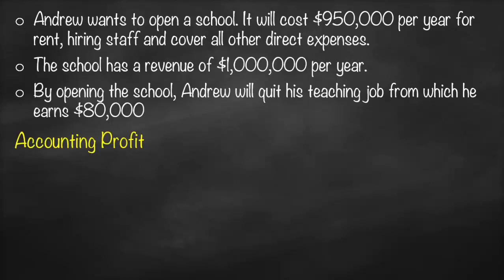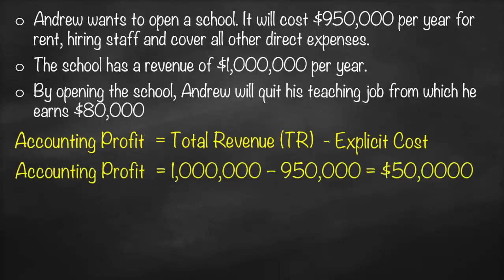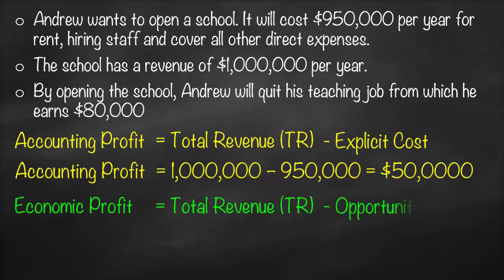We would like to calculate the accounting profit. Accounting profit is total revenue minus explicit cost only. Total revenue is $1,000,000, minus explicit cost of $950,000, giving us an accounting profit of $50,000.